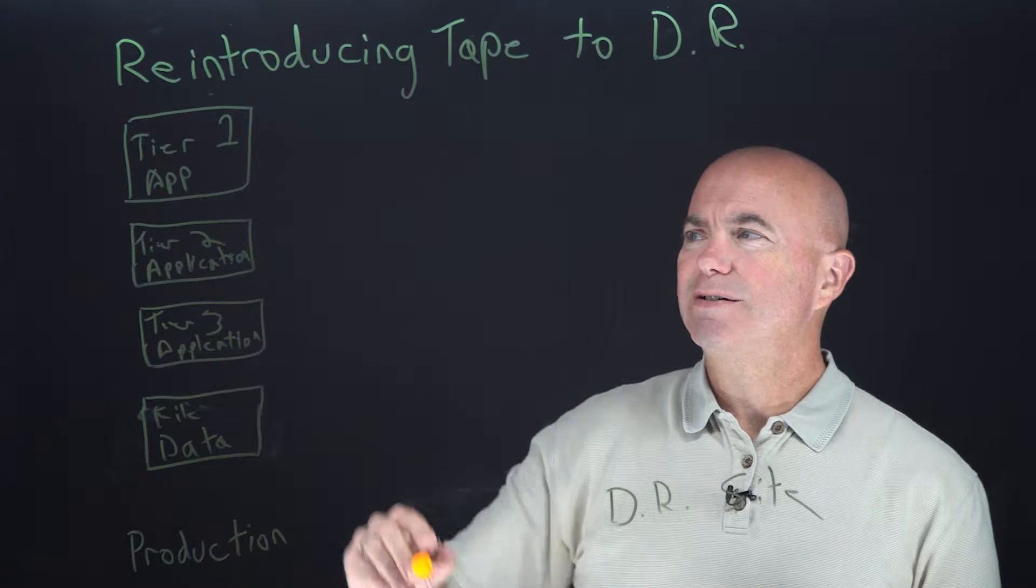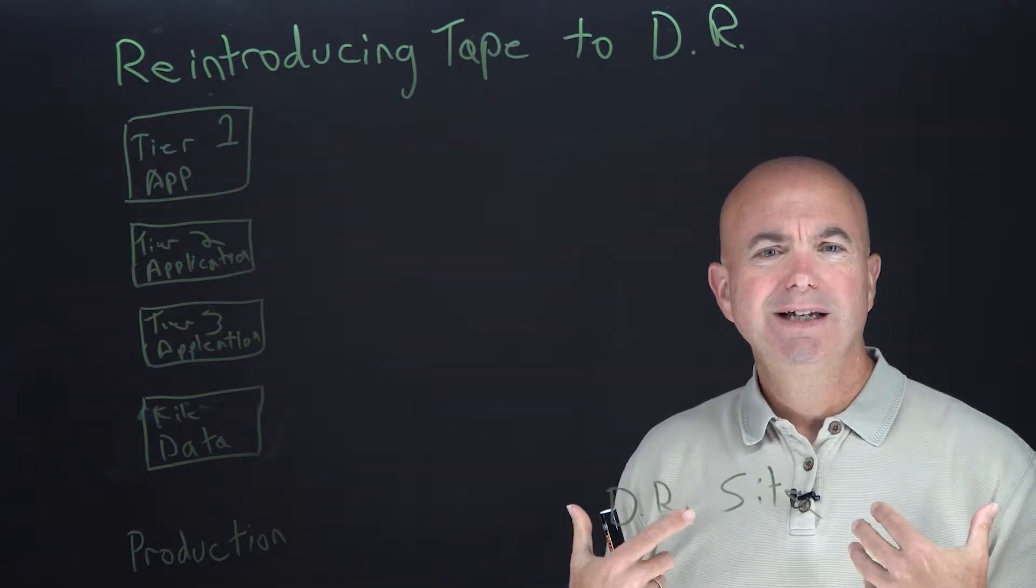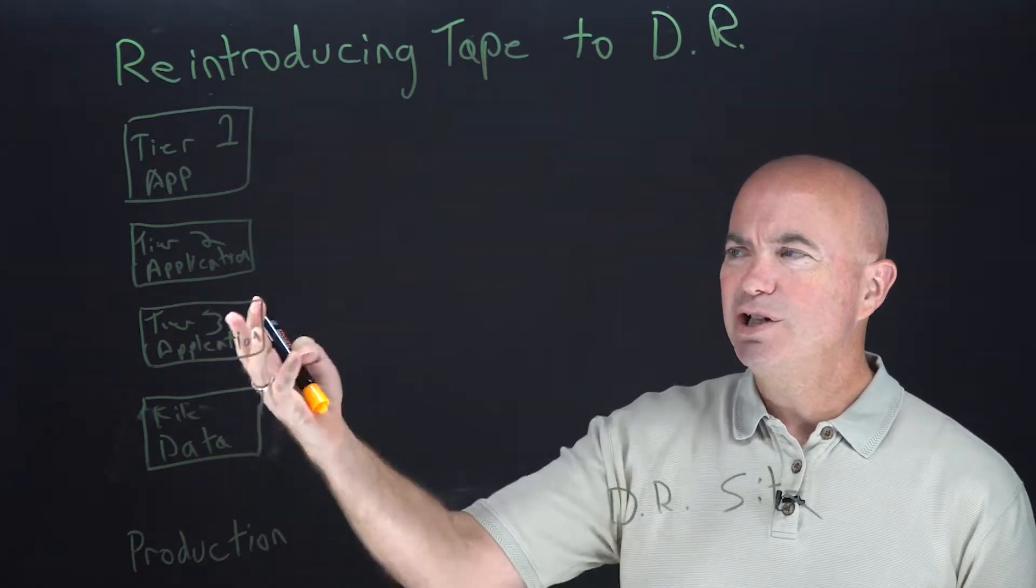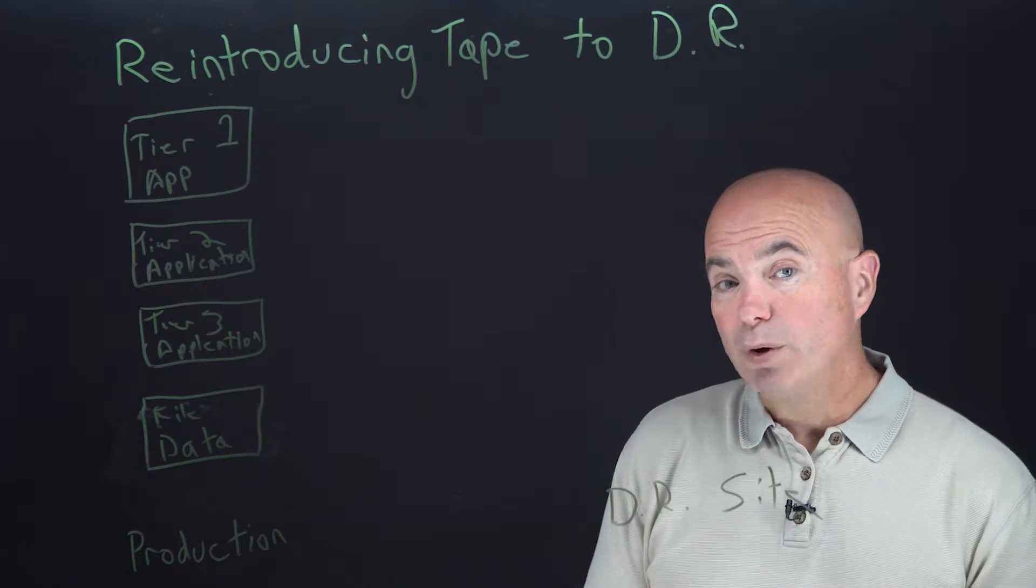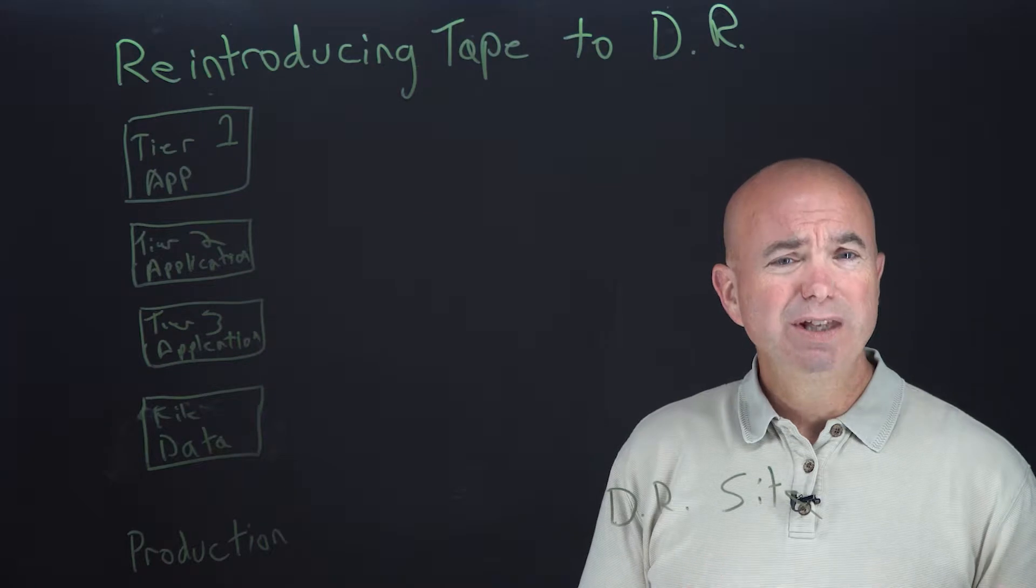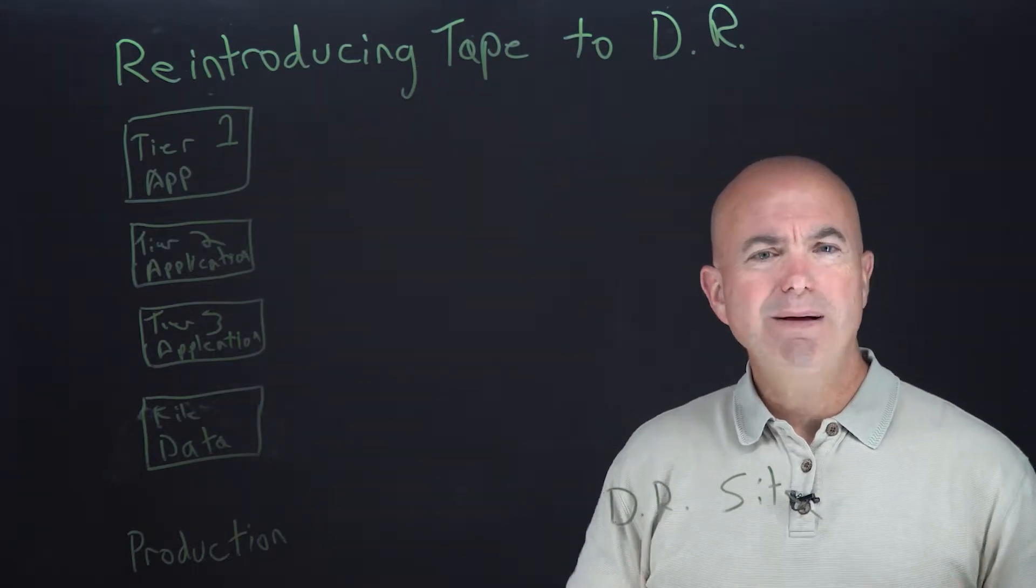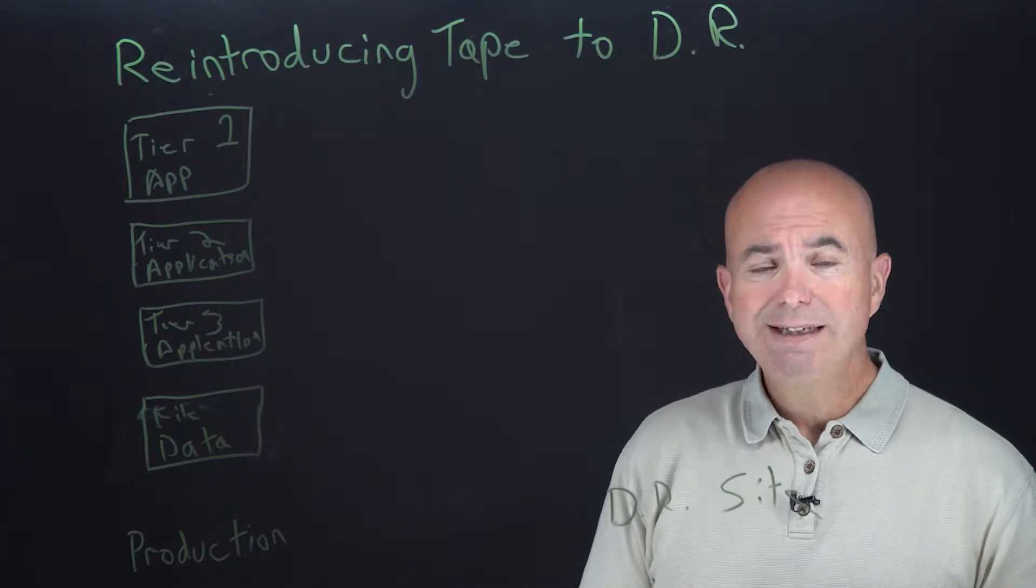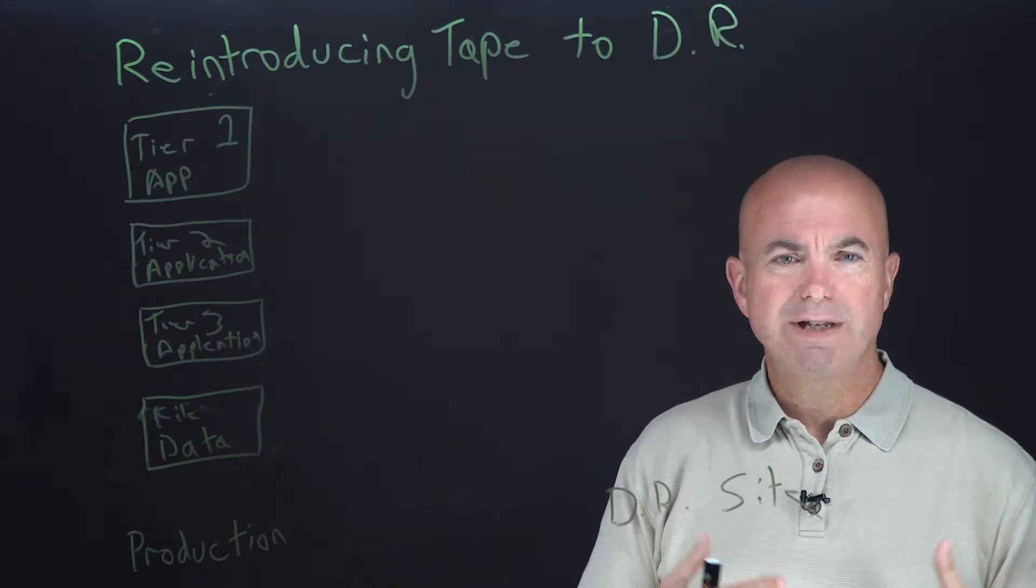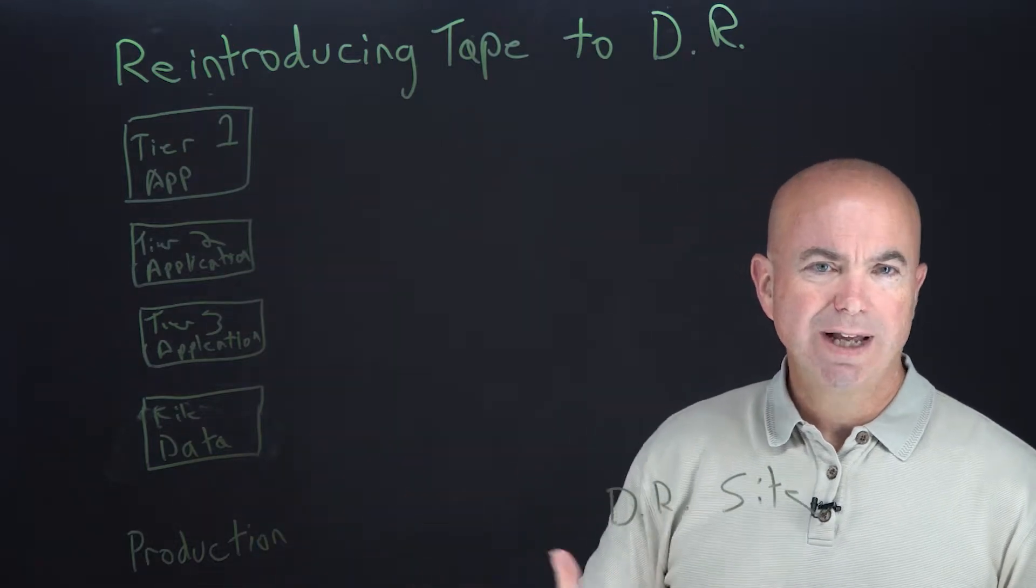I have drawn up here several classes of applications: a tier one app, mission critical, got to be up and running even in the DR site very quickly. A tier two application, important to the business, got to be up and running at the DR site within a few hours. Then a tier three application, probably an application that gets used daily but not something that has to be up instantaneously. And then finally, file data or unstructured data.